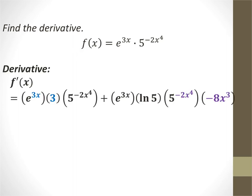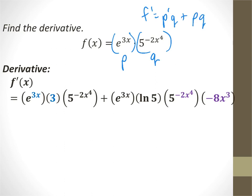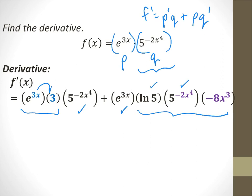This one is a true product rule because we can't simplify in any way. We have two pieces, p and q. The product rule says the derivative is the derivative of the first times the second, plus the first times the derivative of the second. So the derivative of the first: you get e to the 3x, then chain rule out the derivative of 3x, which is 3, times the second — q. Then the first, e to the 3x, times the derivative of the second: it's the natural log of the base, keep it as it is, then chain rule out the derivative of the exponent to give you negative 8x to the third power.